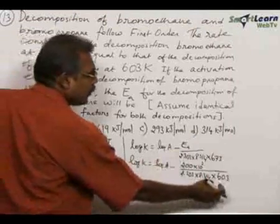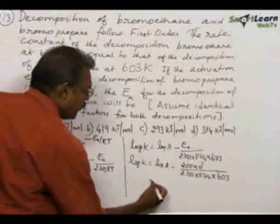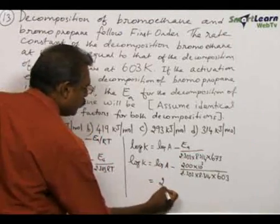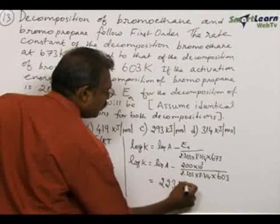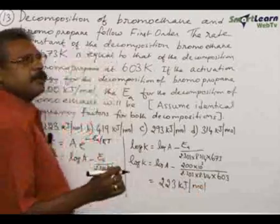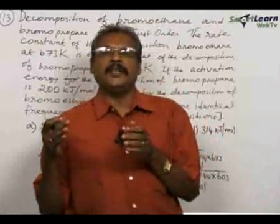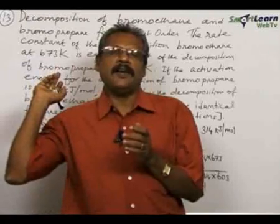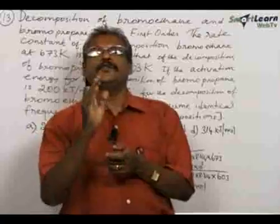All figures are known except Ea. On solving that, we definitely have the answer, that is 223 kilojoules per mole. 223 kilojoules per mole is the energy of activation of bromoethane, that is what is asked in the problem. Go for option A, 223 kilojoules per mole.